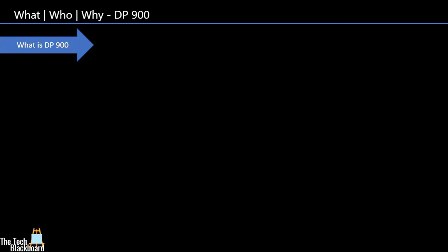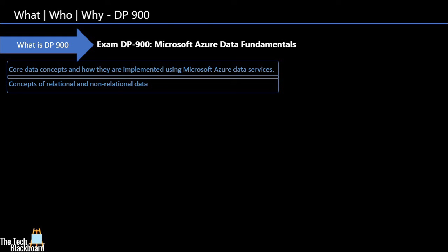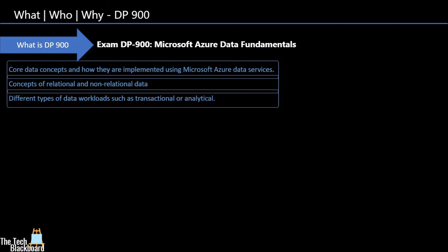DP900 is a Microsoft Azure Data Fundamentals exam, and you can consider it a stepping stone for Azure data-related concepts. After giving this exam you will understand core data concepts and their implementation in Azure, including batch data and streaming data. DP900 also covers relational databases like Azure SQL Database and Azure SQL Managed Instance, non-relational databases like Azure Cosmos DB, Azure Table Storage, Blob Storage, File Storage, and data workloads such as transactional and analytical.